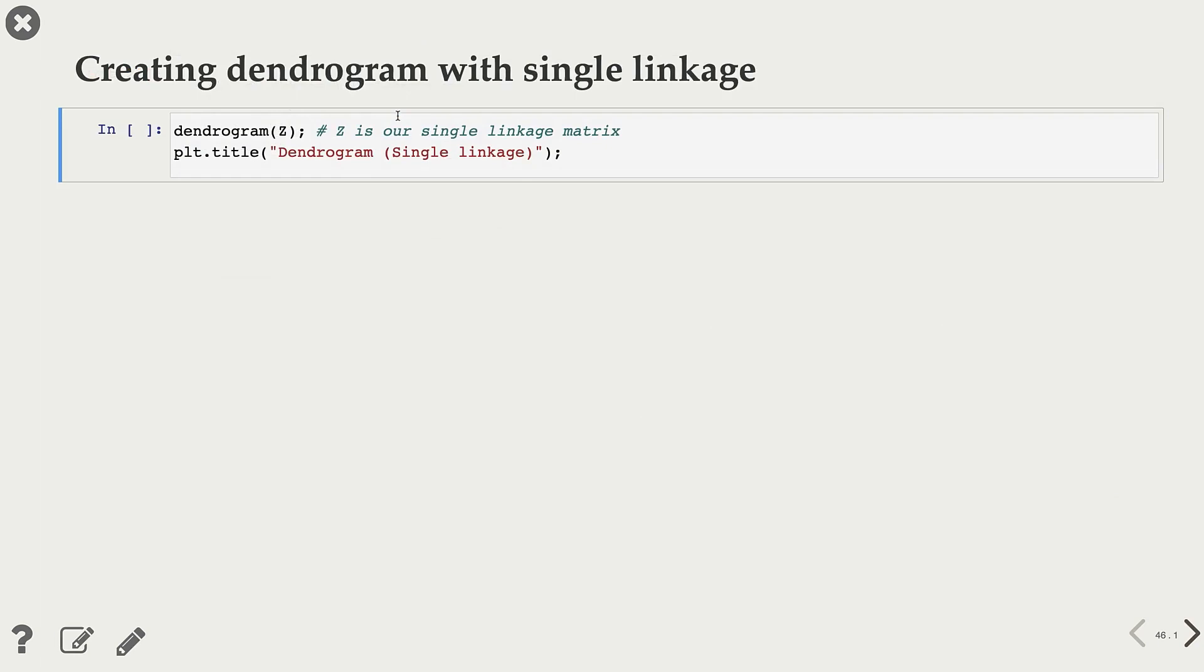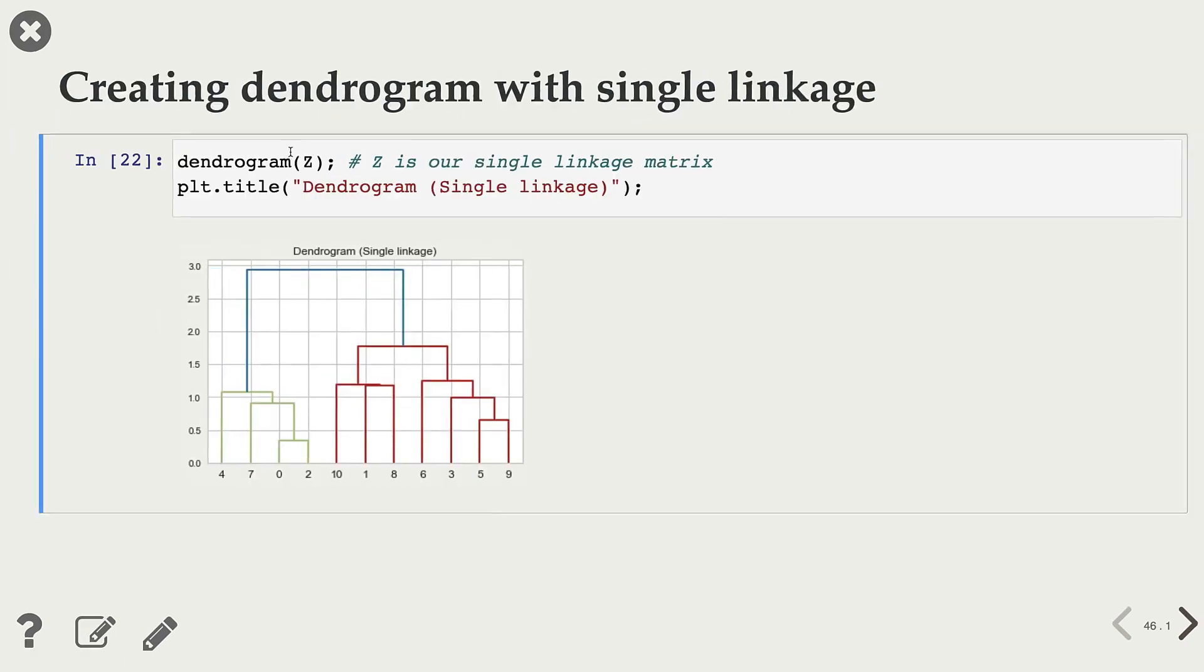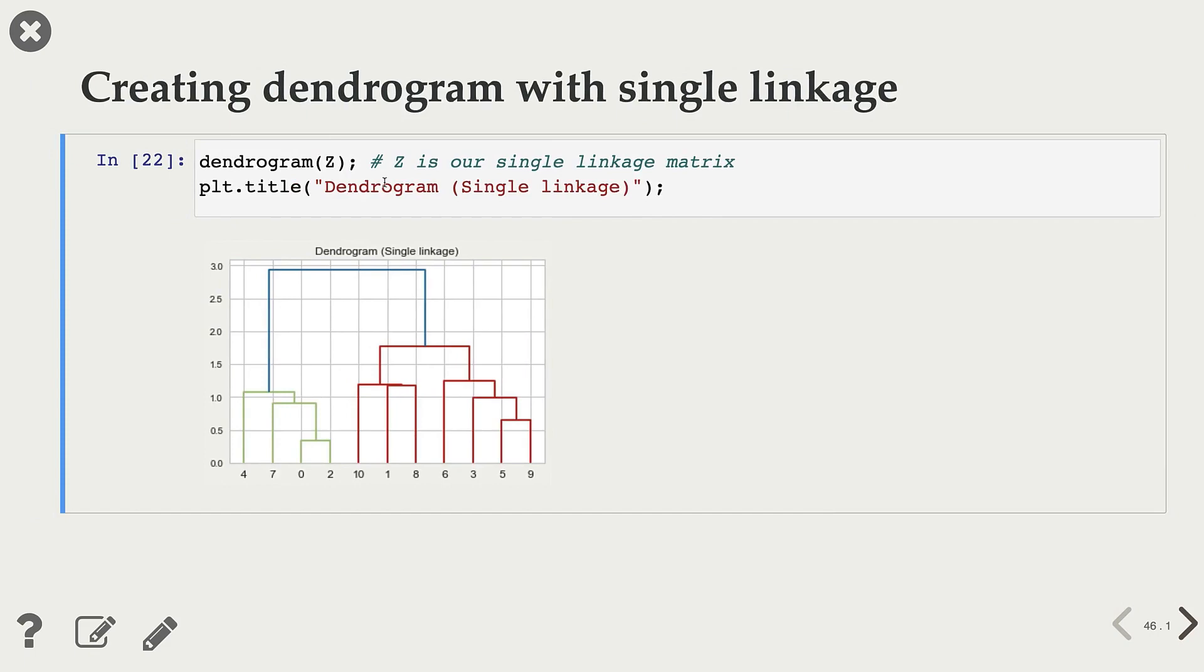Now let's create dendrogram with single linkage. So we already have created our linkage matrix z, and I'm passing it to this dendrogram function, and it gives us this dendrogram.